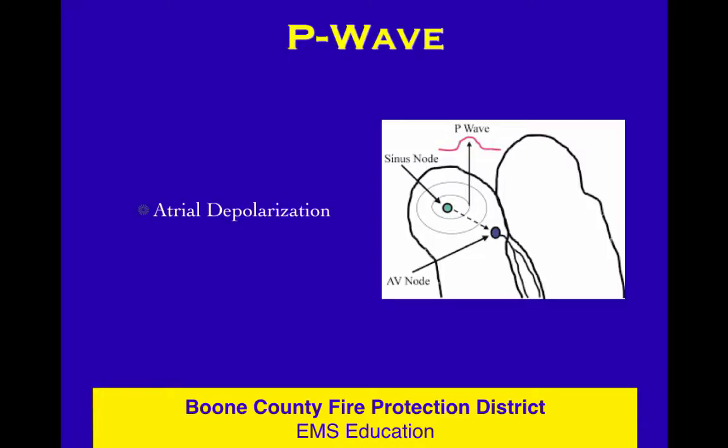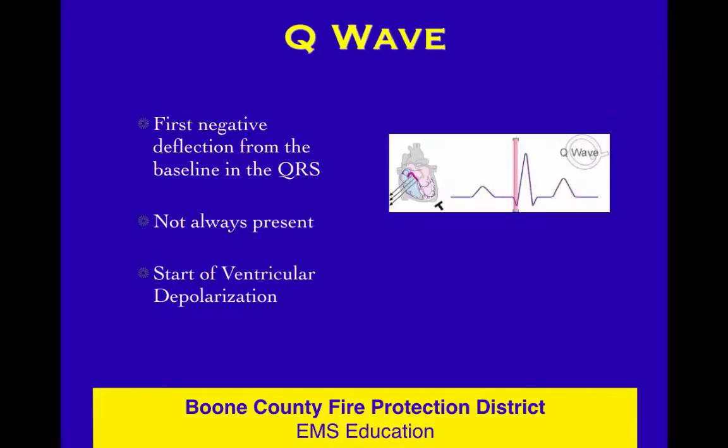What is the P wave? The P wave is atrial depolarization — basic fact, got to know it. As soon as you memorize this, you can move on. Atrial depolarization — that's the P wave. The impulse starts in the sinus node, and as it spreads through both atria, a P wave is generated on the EKG.